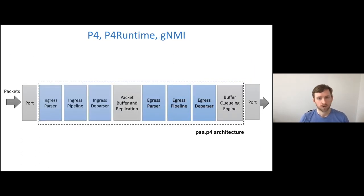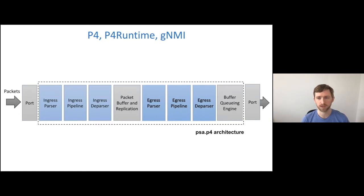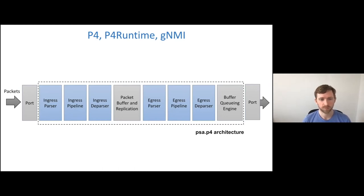Let's take a quick look at how these interfaces interact with the switching pipeline. We start with a switching pipeline, and we abstract that pipeline using something called an architecture. PSA — the Portable Switch Architecture — is one popular example from the P4 consortium. There's also a new Portable NIC Architecture, which is similar but slightly different. Once we have an architecture, it describes the various building blocks that we have to control and configure. Packets come in ports, go through a parsing phase, then a match-action phase, and are ultimately replicated, buffered, queued, or dropped before egress processing.